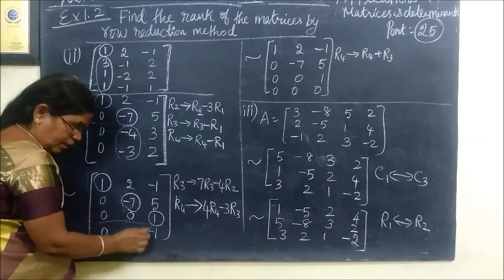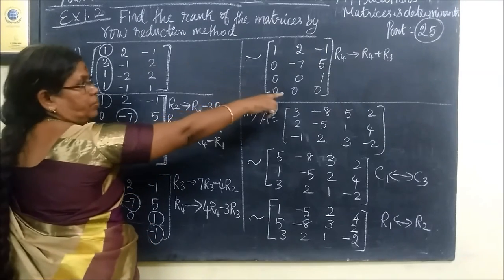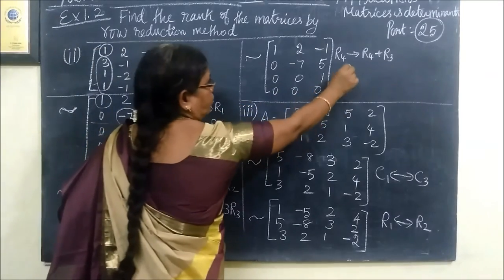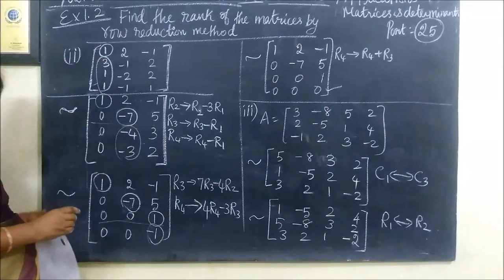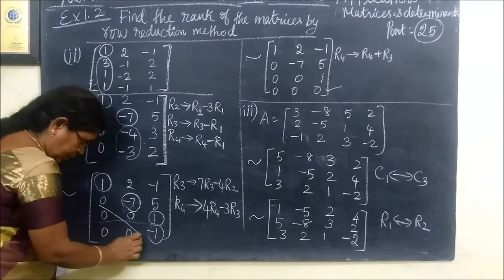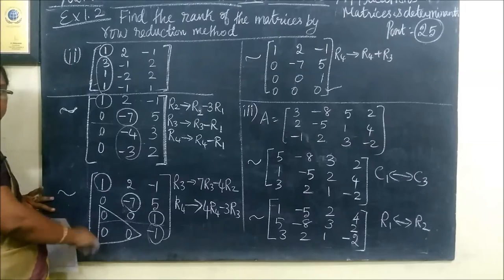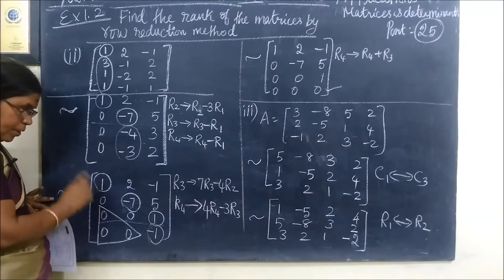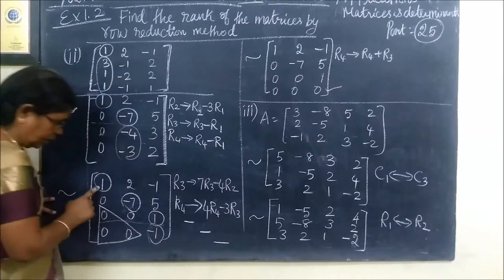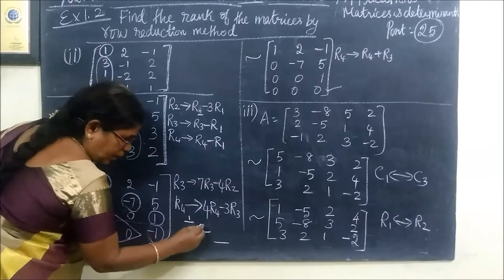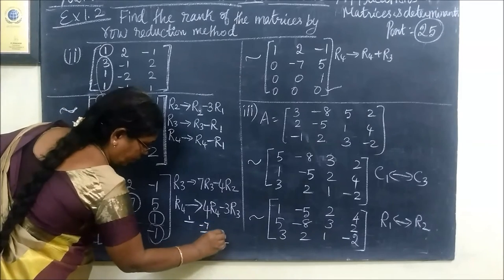This is what we call zero. This is zero. We will do all the row transformations. In this situation, let us assume 1, and we will use the right side of this one.